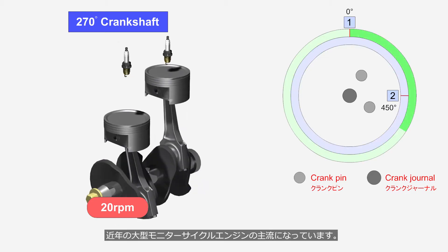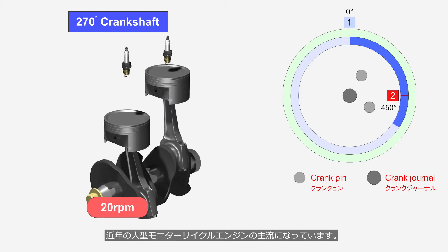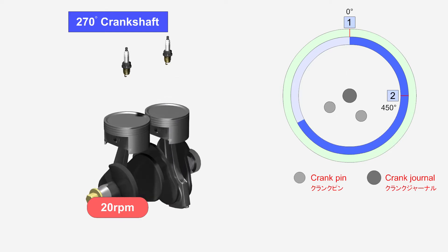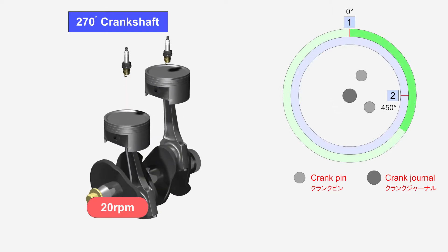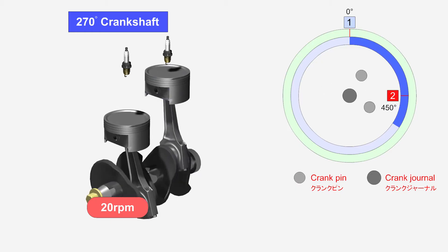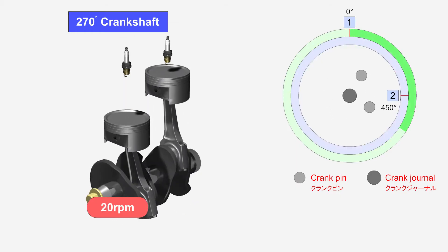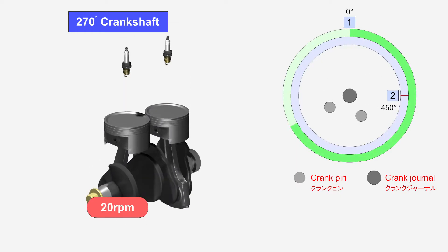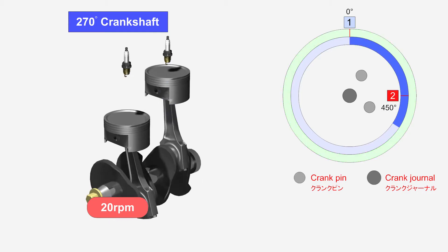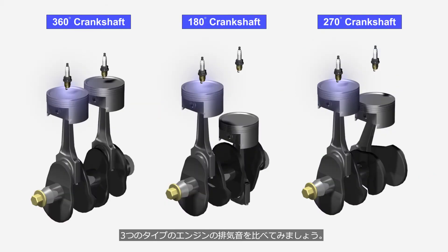The 270 degrees crankshaft has become the mainstream in modern large displacement motorcycle engines. Compare the exhaust sounds of the three types of engines.